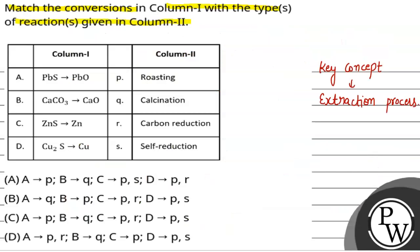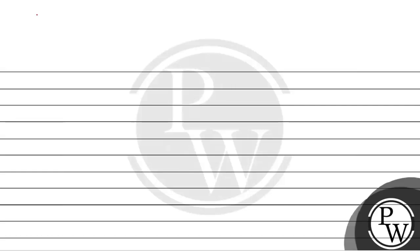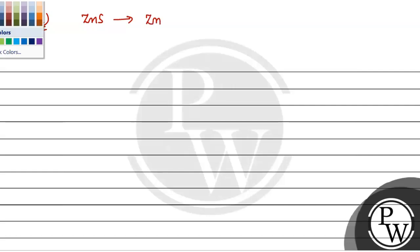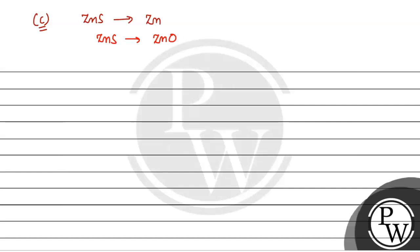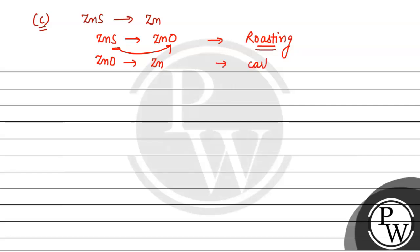Next, हम बात करते हैं C part की. Zinc sulfide gets converted into zinc. इसमें दो processes होंगी. पहले zinc sulfide, zinc oxide में convert होगा — यहाँ sulfide oxide में convert हो रहा है, तो यह roasting होगी. उसके बाद zinc oxide, carbon reduction के under जाएगा to give zinc metal. तो जो हमारा C part है, वो दो processes के under जाएगा — P and R.